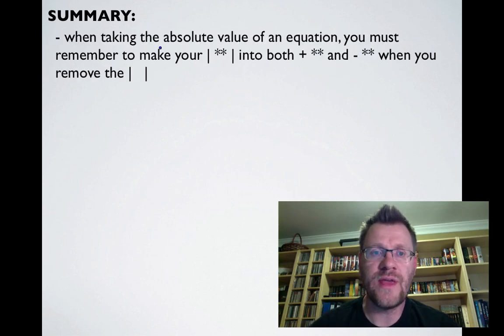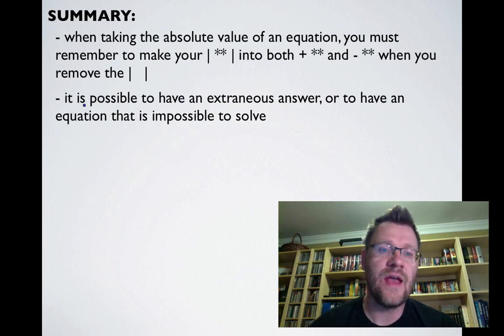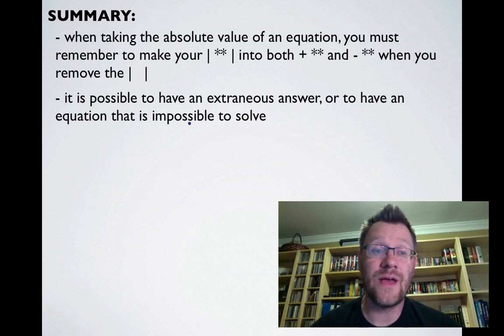In summary: when taking the absolute value of an equation, you must remember to make both the positive and negative versions when you remove the absolute value signs. That means you're solving two equations. If you're not solving two equations, you're only getting half the right answers. It is possible to have an extraneous answer or an equation that is impossible to solve.